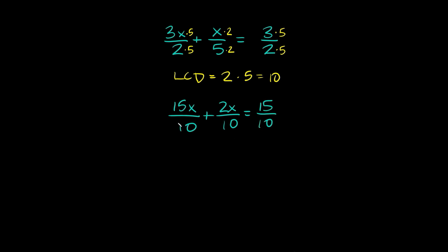Now that all the denominators match we can actually just drop them. So then all we're left with is the numerators. So 15x plus 2x is equal to 15. So then here we get 17x is equal to 15. We can divide both sides by 17 to solve for x. So then here we get that x is equal to 15 over 17.